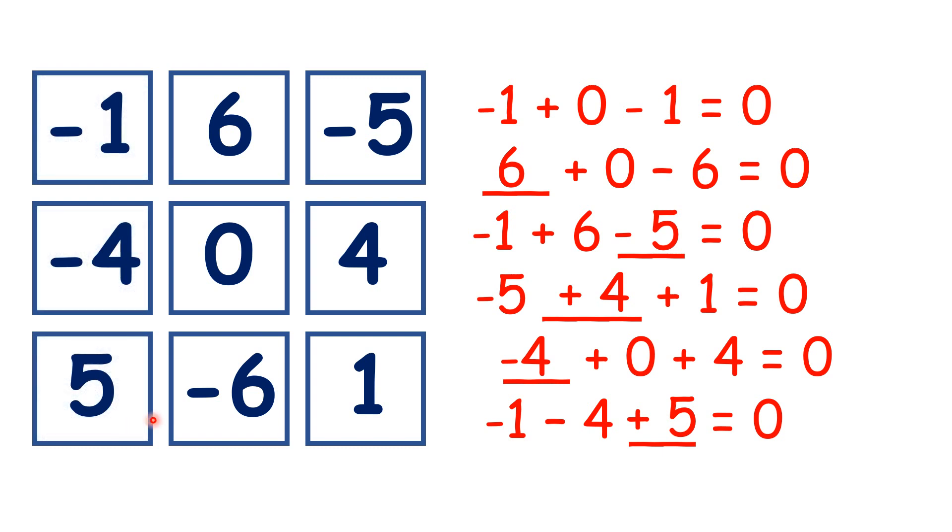So now we've completed our magic square, can you spot any patterns here? We'll notice that opposite squares are always the positive and the negative of the same number.